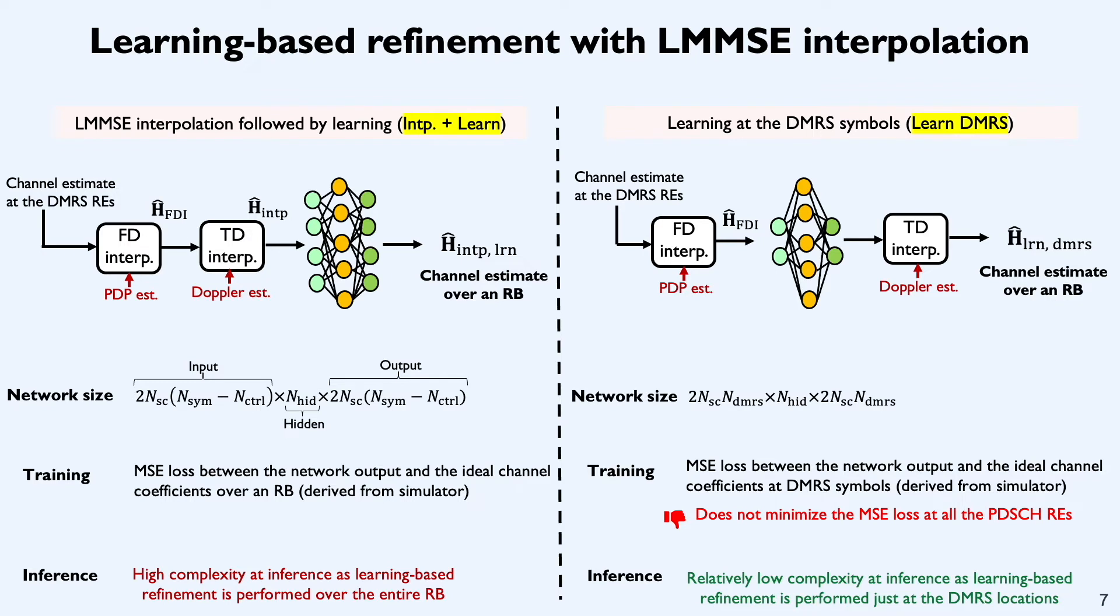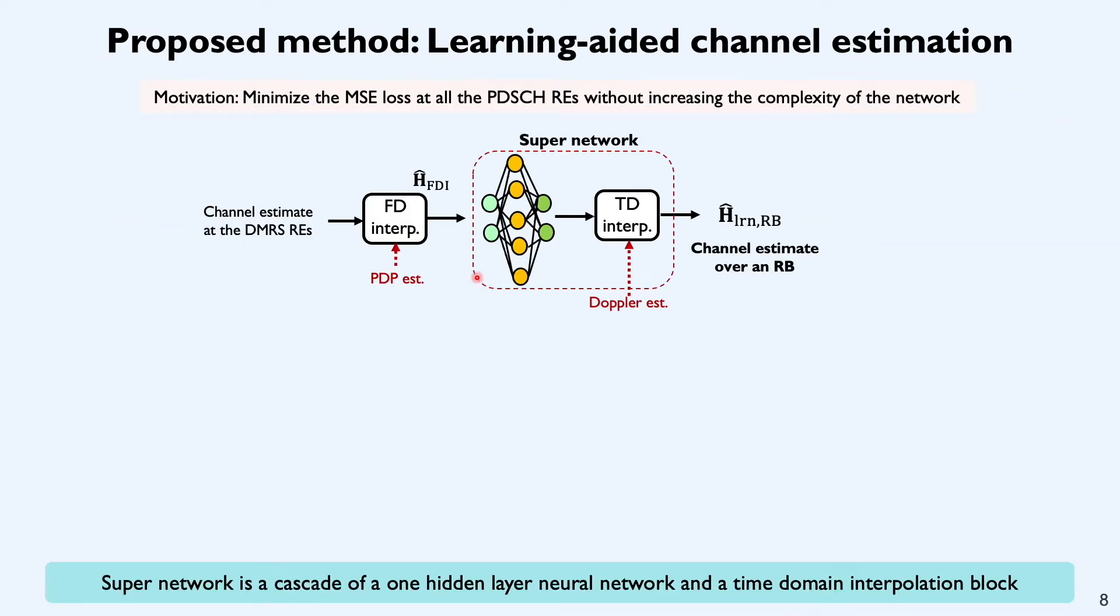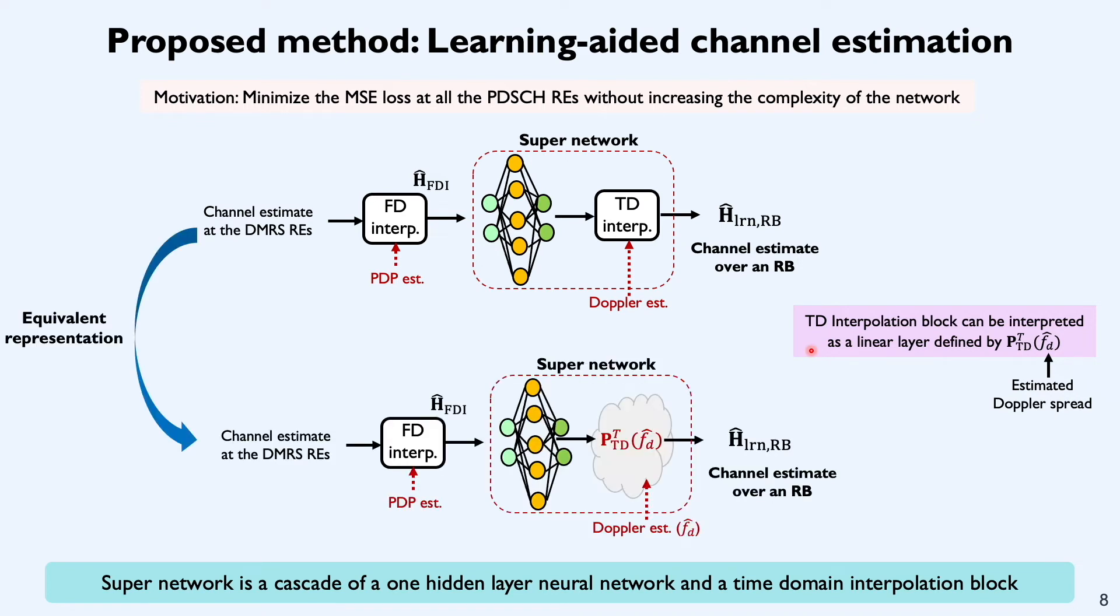To overcome the limitation with this approach, we propose a new technique wherein we train the MLP network in a different way. Instead of minimizing the MSE loss exactly at the DMRS locations, we minimize MSE loss over an entire RB. And we do that by introducing this concept of a super network. The super network basically encompasses the MLP network and the TD interpolation block. To understand the contents within the super network, we could simply replace this TD interpolation block by a linear layer that essentially performs time domain interpolation. The weights of this linear layer are just PTD transpose. These are the linear interpolation weights obtained by exploiting the time domain channel correlation.